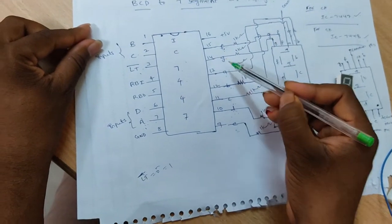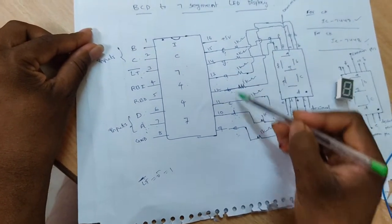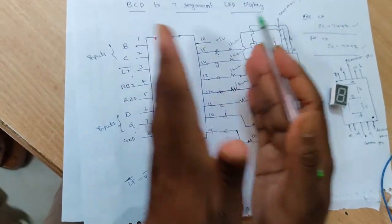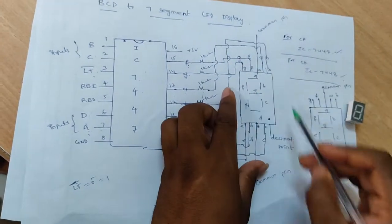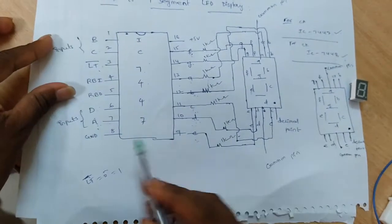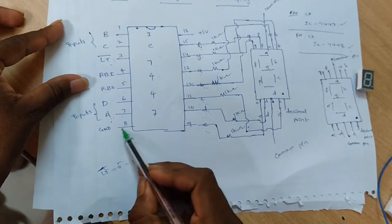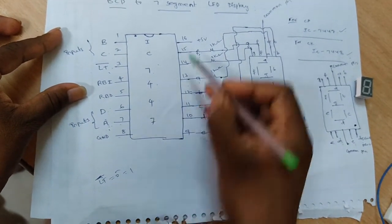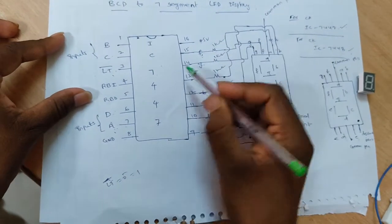The outputs are F, G, A, B, C, D, E. These outputs are given to the 7 segment LED display. The IC has a total of 16 pins — the 8th pin is the ground pin and the 16th pin is the supply pin.